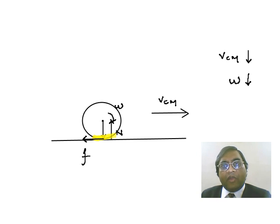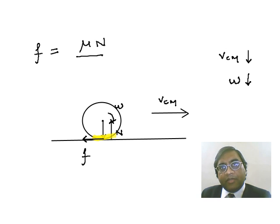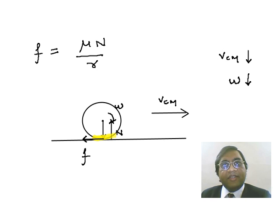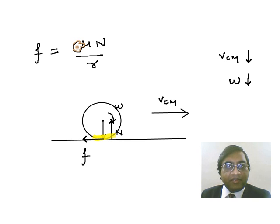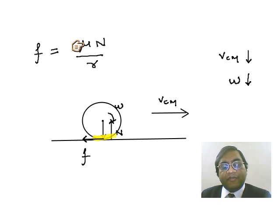What is the magnitude of this rolling friction? Rolling friction equals mu times normal reaction divided by the radius. What is interesting here is that mu cannot be dimensionless. The left side is force, and the normal reaction is also force, so obviously mu must have the dimensions of length.